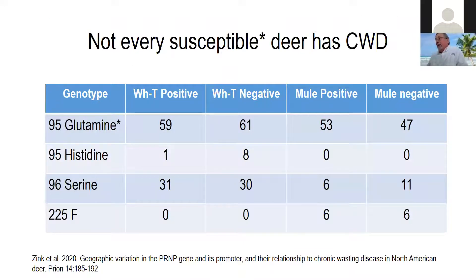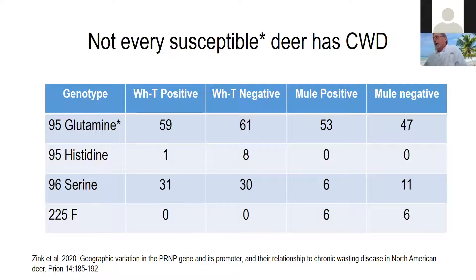Not every susceptible deer has CWD. Of the deer tested by the UNL Vet Diagnostic Center with the position-95 glutamine, roughly 50% of the whitetails and 50% of the muleys were positive. The histidine variant — the more resistant one — had only one positive out of nine tested, though sample sizes are small. Serine provides some resistance at about 50-50, though maybe not as much as expected. One reason for so many negatives in the serine group is that if deer were taken at different ages, they might not have had enough time to contract CWD.